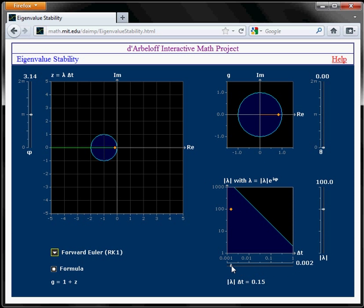So now you can see that for a small delta T, the simulation will be eigenvalue stable. But as I increase delta T, eventually that orange dot crosses over the line and outside of the stability boundary.